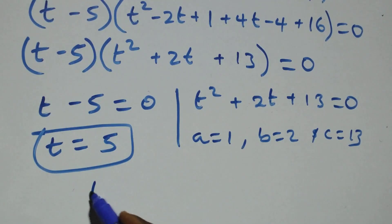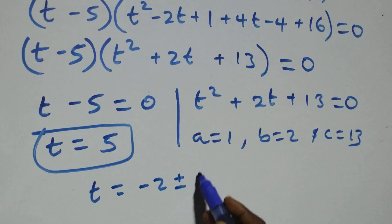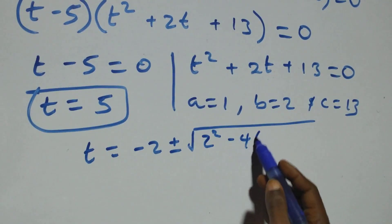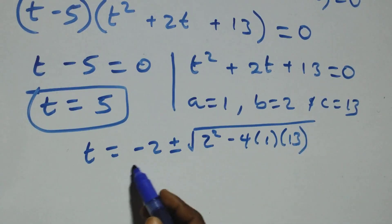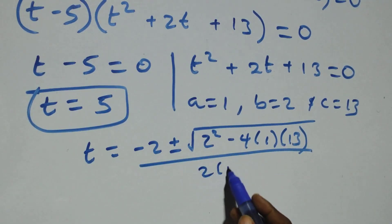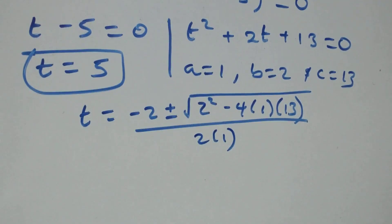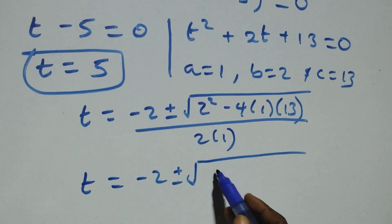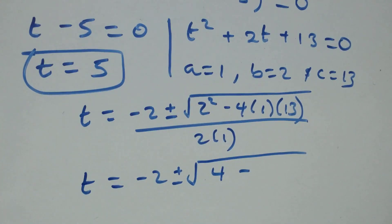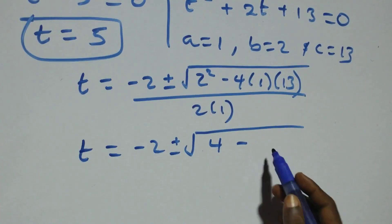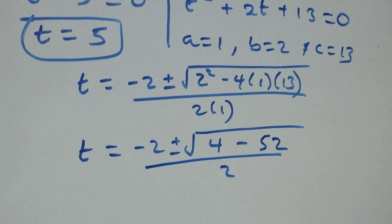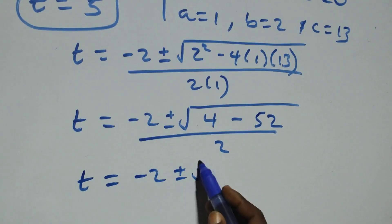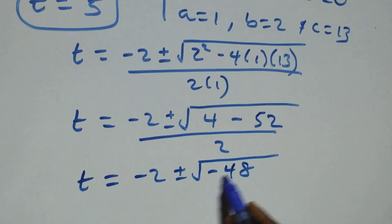Applying the quadratic formula, t = (−2 ± √(4 − 52)) / 2, which gives t = (−2 ± √(−48)) / 2.